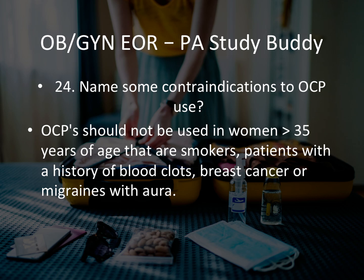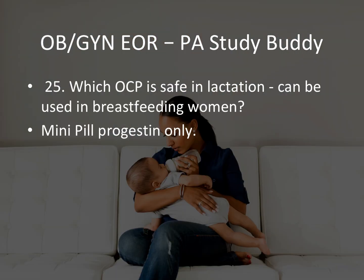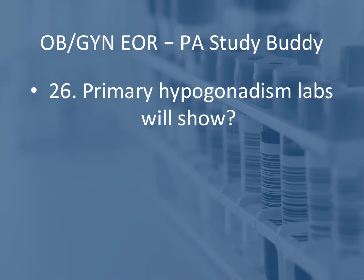Question 24: Name some contraindications to OCPs. OCPs should not be used in women over 35 who are smokers, patients with a history of blood clots, history of breast cancer, or migraines with aura — any of these is a contraindication. Question 25: Which OCP is safe in lactation? That is the mini pill — progestin only. A breastfeeding patient interested in OCP gets the mini pill, progestin only.